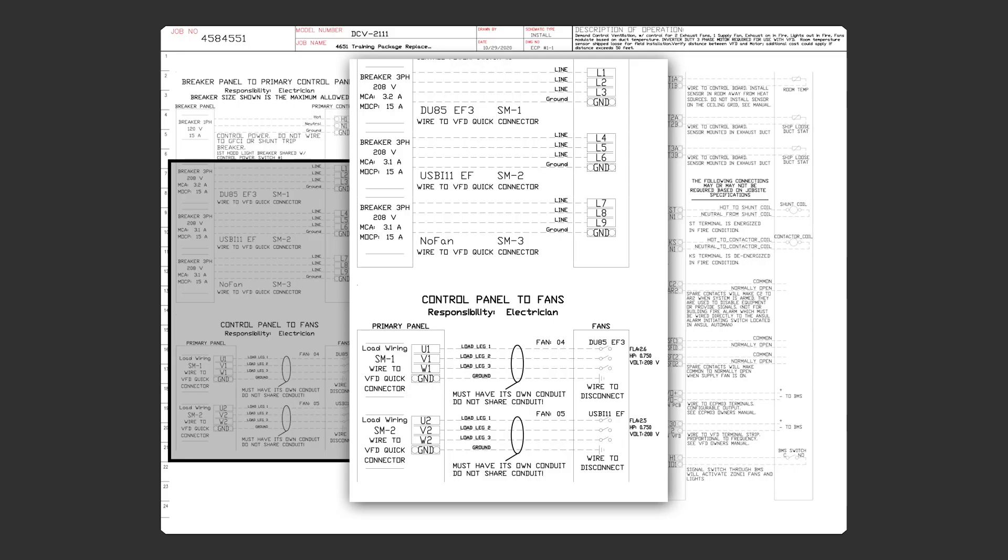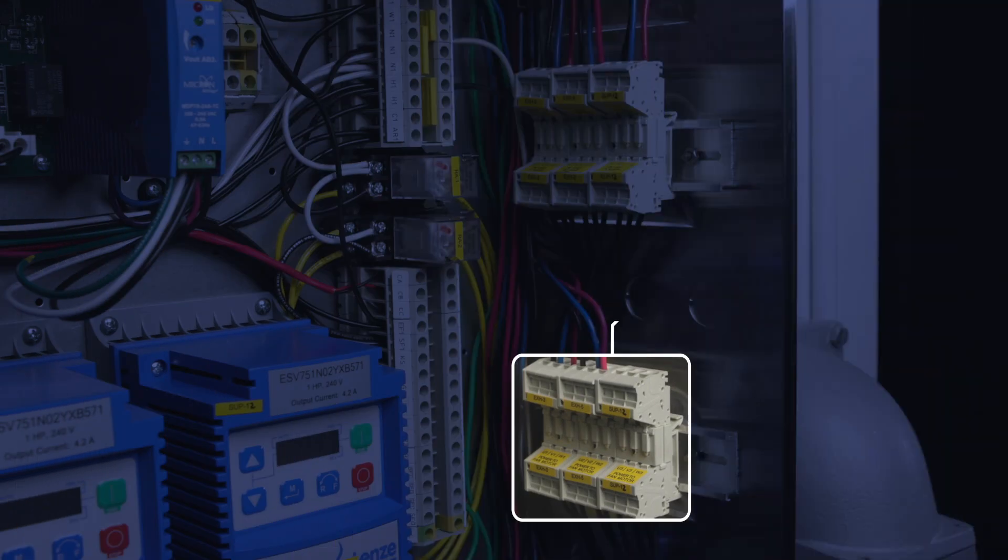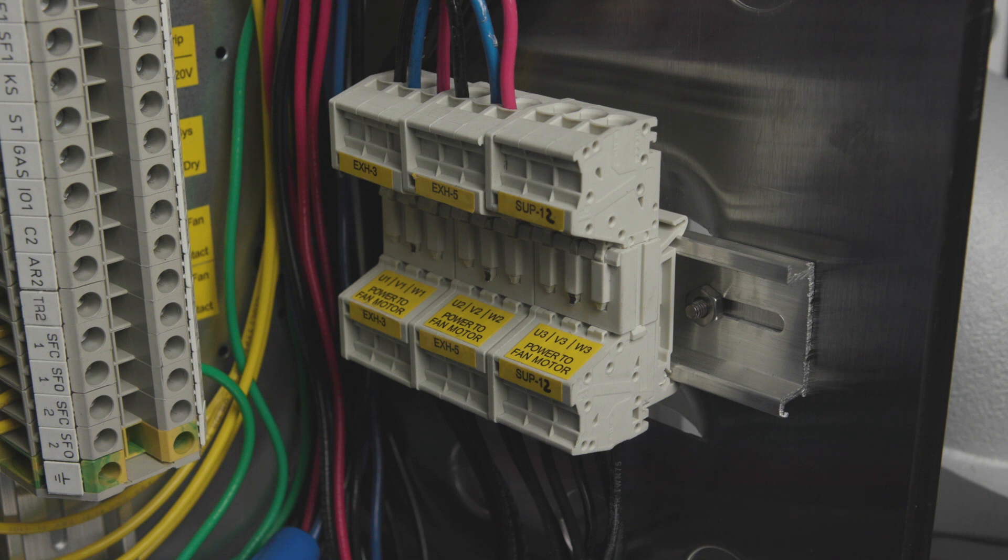Then, if you look at the wiring diagram again, you see the high-voltage wire from the VFD to the exhaust fan, or from terminals U1, V1, W1, located here, to the disconnect on the fan. The remainder of the diagram reads the same.